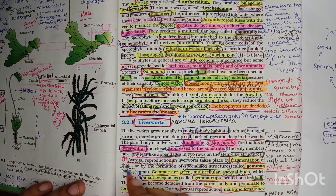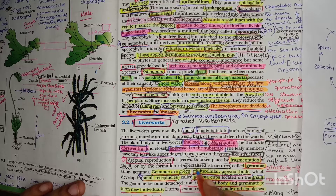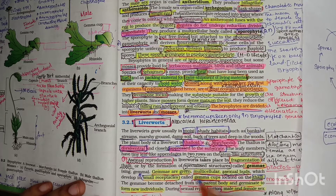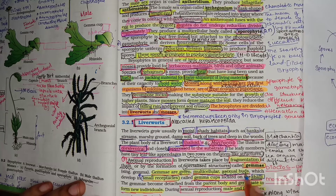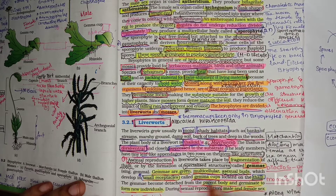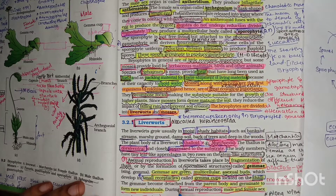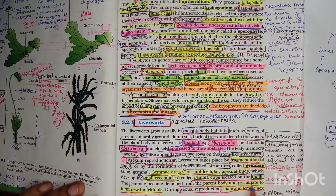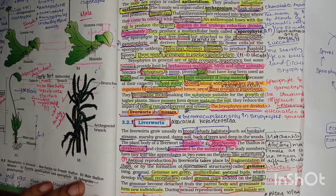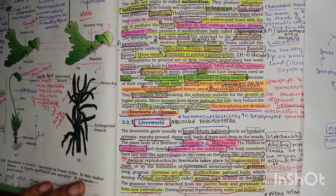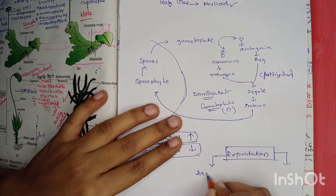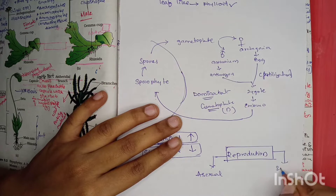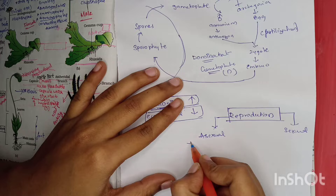Asexual reproduction in liverworts takes place by fragmentation of thalli or by formation of specialized structures known as gemma. Gemma are green, multicellular, asexual buds which develop on small receptacles called gemma cups located on the thalli. The gemma become detached from the parent body and germinate to form new individuals.